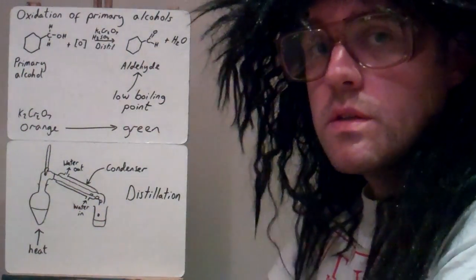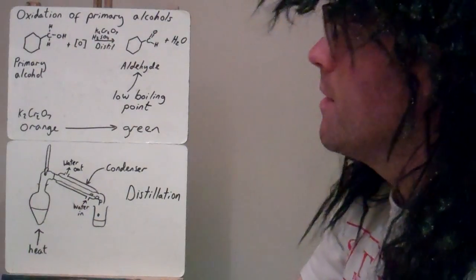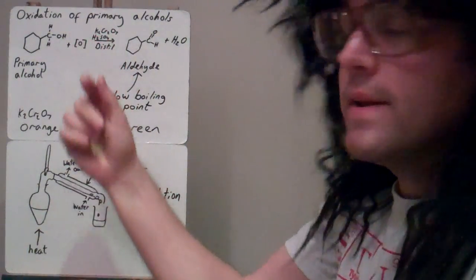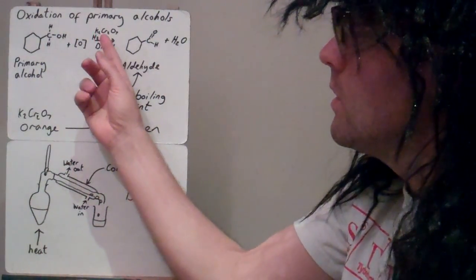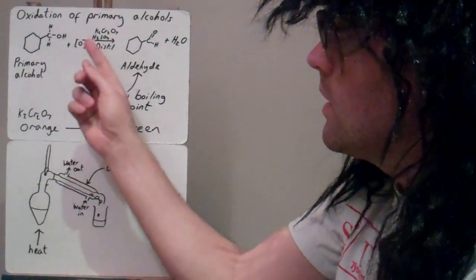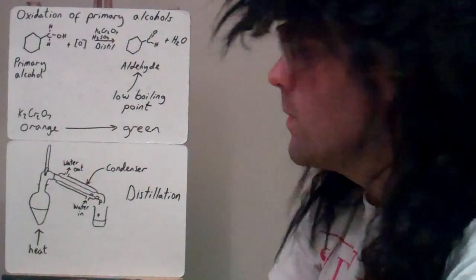And to oxidize an alcohol, including primary alcohols, we use potassium dichromate in acid conditions or acidified potassium dichromate. Potassium dichromate is K2Cr2O7 and we acidify it with sulfuric acid.